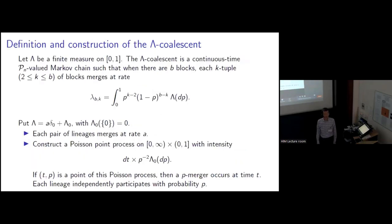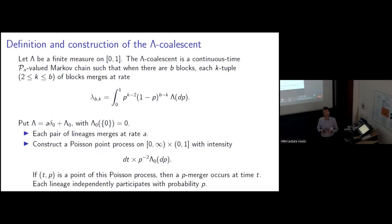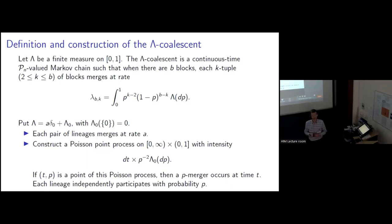I want to define now what the lambda coalescent is. Here, lambda is a finite measure on the unit interval. The lambda coalescent is a continuous time Markov chain, taking its values in the set of partitions of the integers one through n. It's defined by the property that whenever the partition has b blocks, each possible transition that involves k of the blocks merging into one is happening at a rate given by this integral. And these are the only allowable transitions.